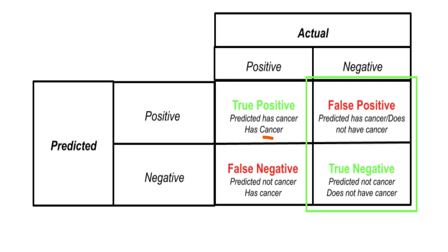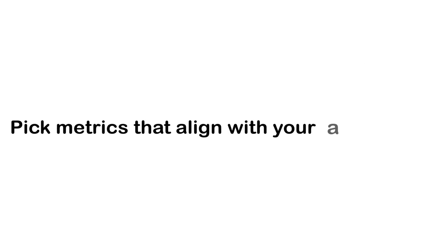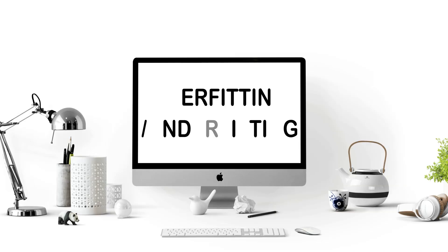Always keep the goal of your project in mind. In medical diagnosis, you might care more about avoiding false negatives than false positives. For example, in a diagnostic tool predicting cancer, it's a bigger problem to miss potential cancers than to classify some benign tumors as cancer that can then be quickly ruled out with a second test. Pick metrics that align with your actual goals.